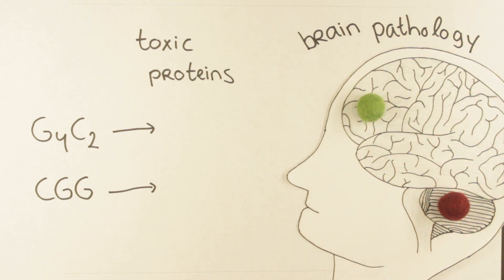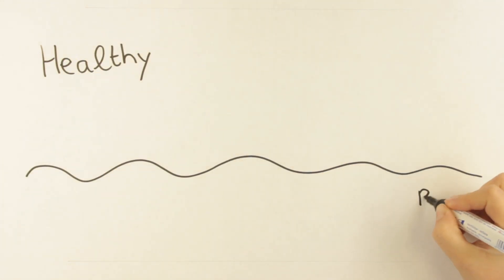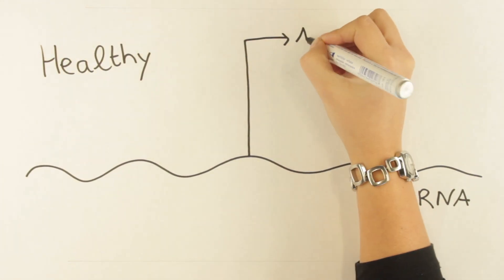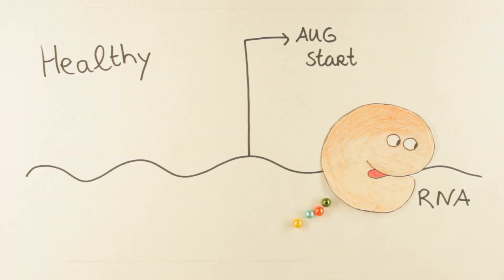But how are these repeats translated in human beings? In healthy individuals, RNA is translated by ribosomes that scan the RNA for an AUG start site and start producing protein from this point on.